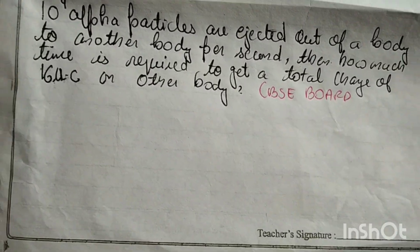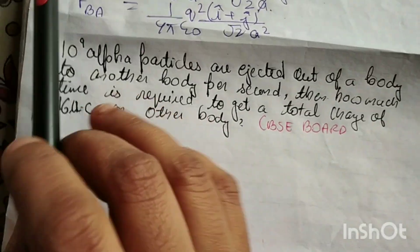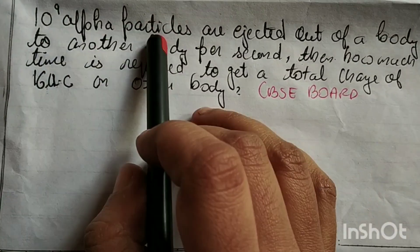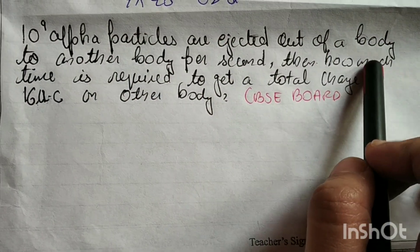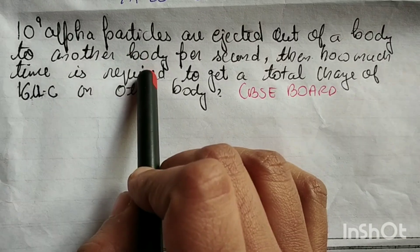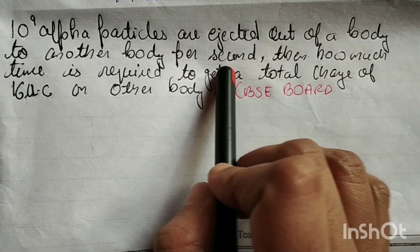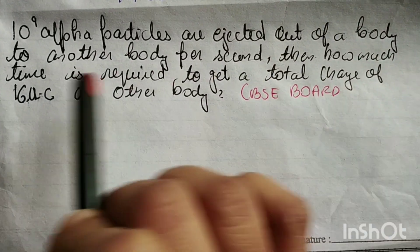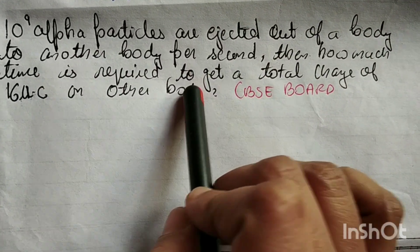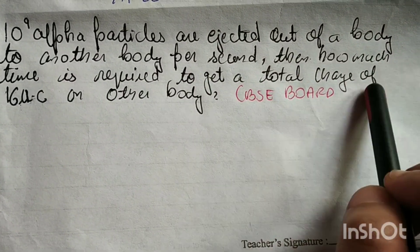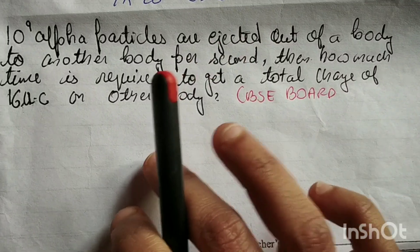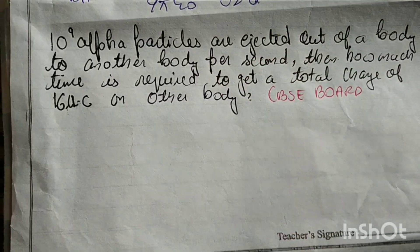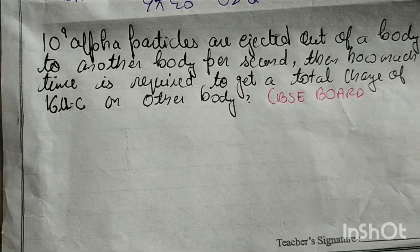Good morning students. Next question: 10 to the power 9 alpha particles are ejected out of a body to another body per second. How much time is required to get a total charge of 16 microcoulombs on the other body?